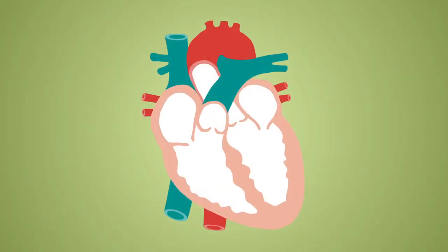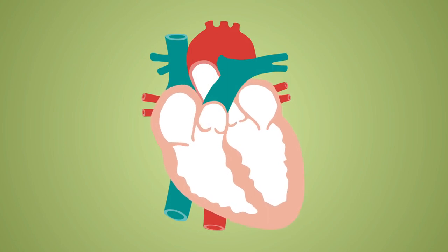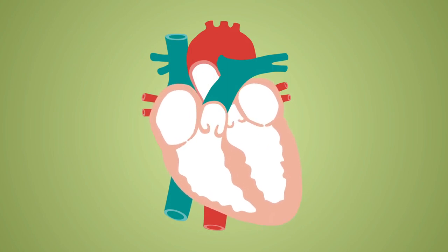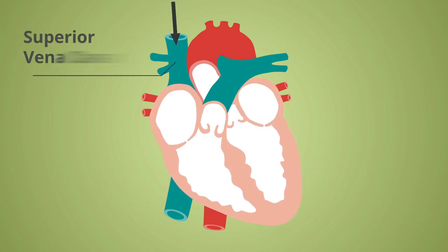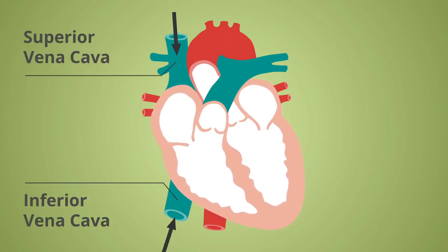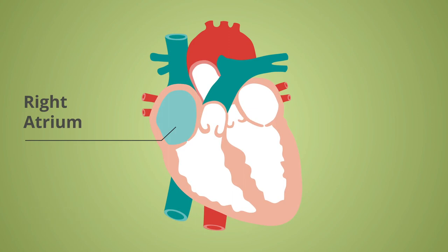The heart acts as the pump which enables blood flow around the body within the systemic and pulmonary circulation. Deoxygenated blood returns from the body to the heart via the superior and inferior vena cava, entering the right atrium.